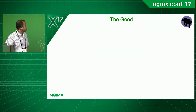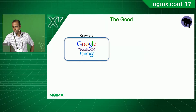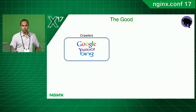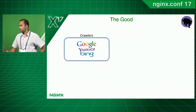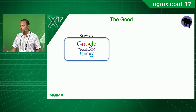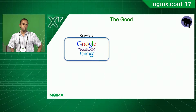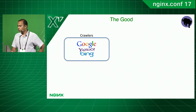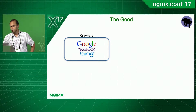Let's start with the good automation first — good bots. The most obvious ones are the crawlers that hit your site: the Yahoo, the Bing, the Googles of the world. Most of the time you do want them on your site unless they're doing something nasty.